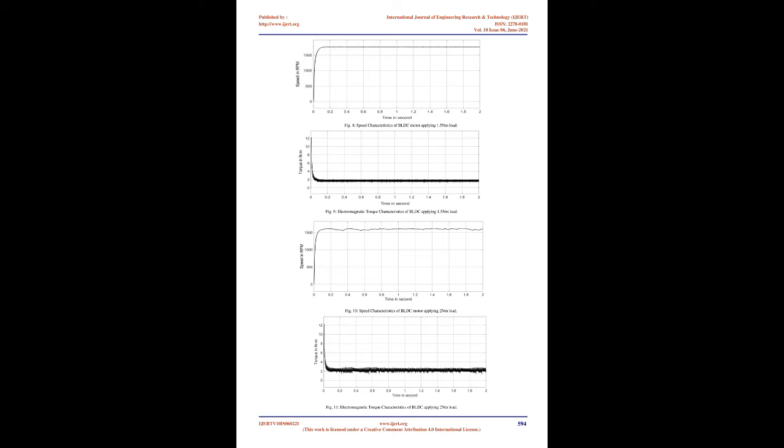The inverter is controlled by the rotor position and the applied voltage. The simulation is done without load starting from 50V, and then the applied voltage is increased step by step with an interval of 50V up to 250V. The simulation is repeated by giving loads of 1 Nm, 1.5 Nm, and 2 Nm. The results are tabulated in Table 2. The waveforms of speed and torque at supply voltage 150V are shown in Figs. 4 to 13.